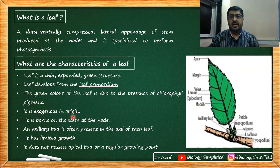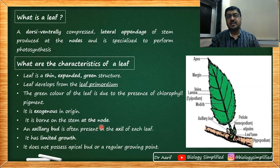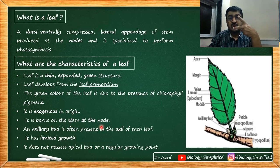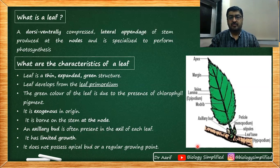Leaves have exogenous origin — they arise from outer tissues of the stem. They are born on the stem at the node, and the distance between two successive nodes is called the internode. An axillary bud is often present in the axil of each leaf.